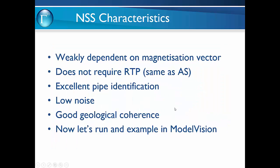So what are the characteristics of the normalised source strength? It is weakly dependent on the magnetisation vector. It doesn't require reduction to poles, similar to the analytic signal. It's excellent for pipe identification. The noise is very low and it has good geological coherence. So let's now run an example in Model Vision.